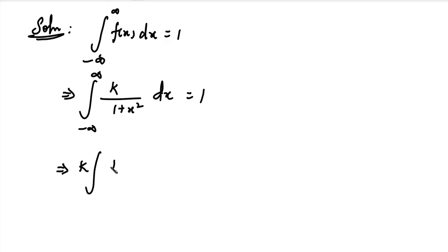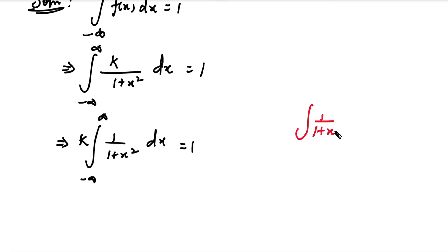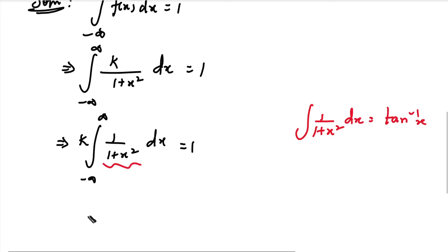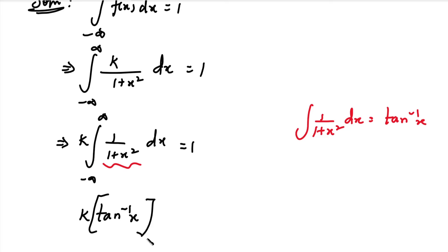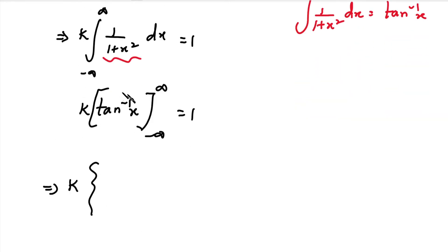So we get k times the integral of 1 divided by (1 plus x squared) dx, with limits minus infinity to plus infinity, equal to 1. The integral of 1 divided by (1 plus x squared) dx equals tan inverse x. So after integrating, we have k times tan inverse x, with lower limit minus infinity and upper limit plus infinity, equal to 1.